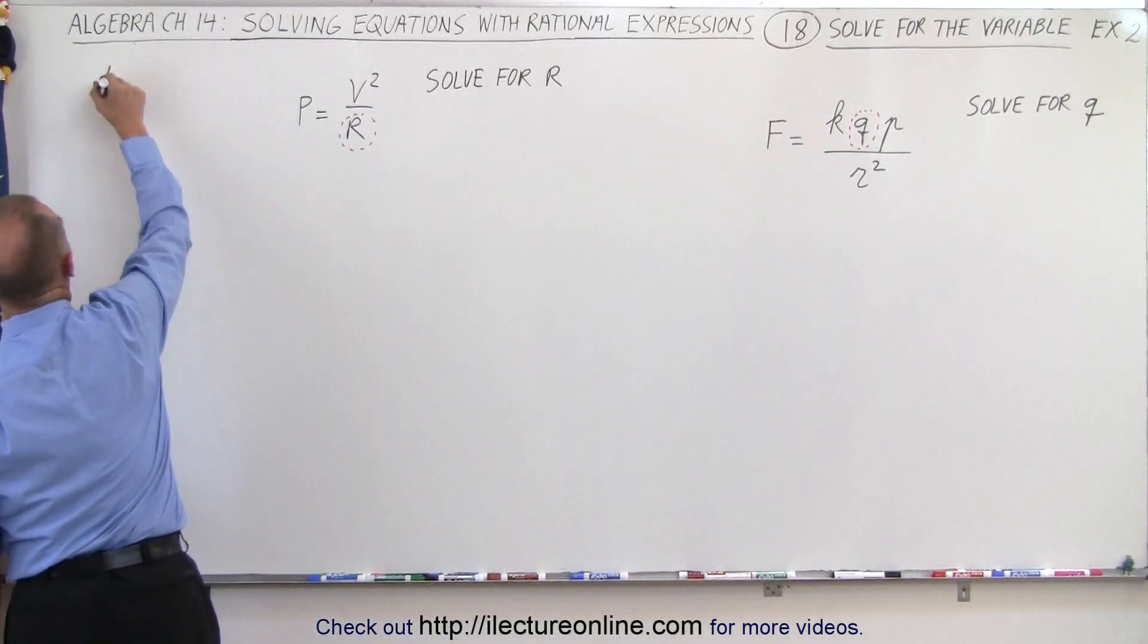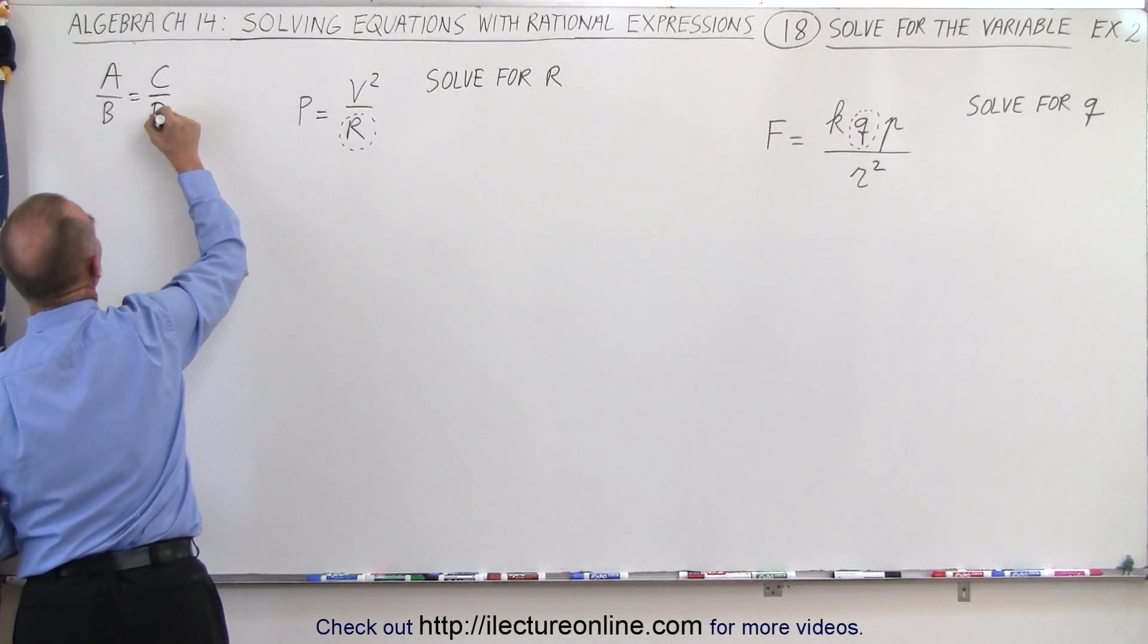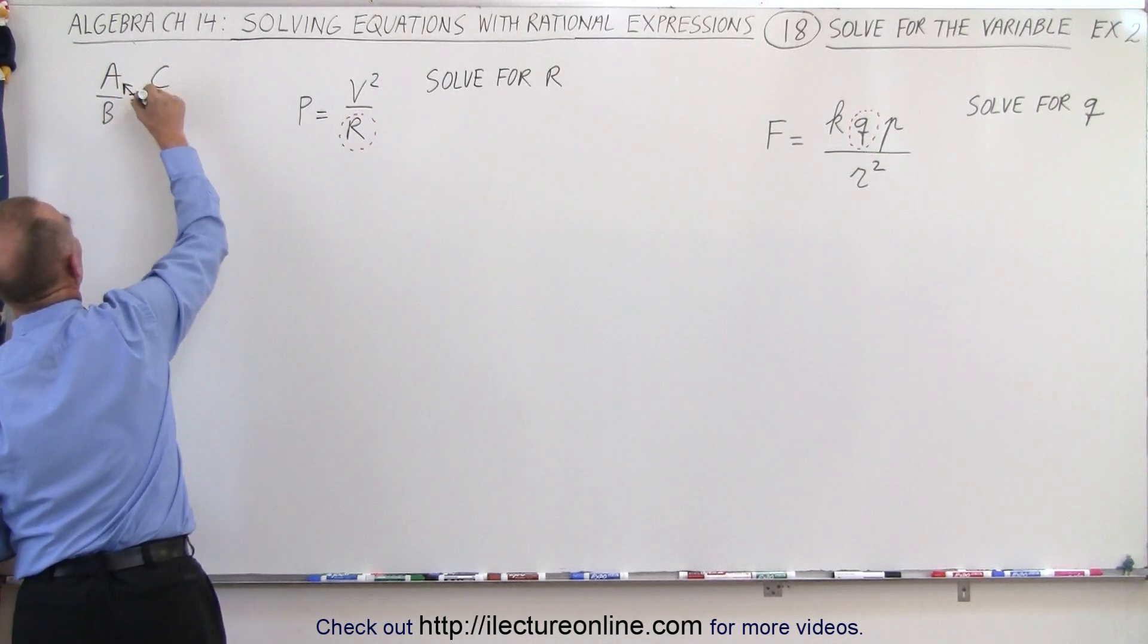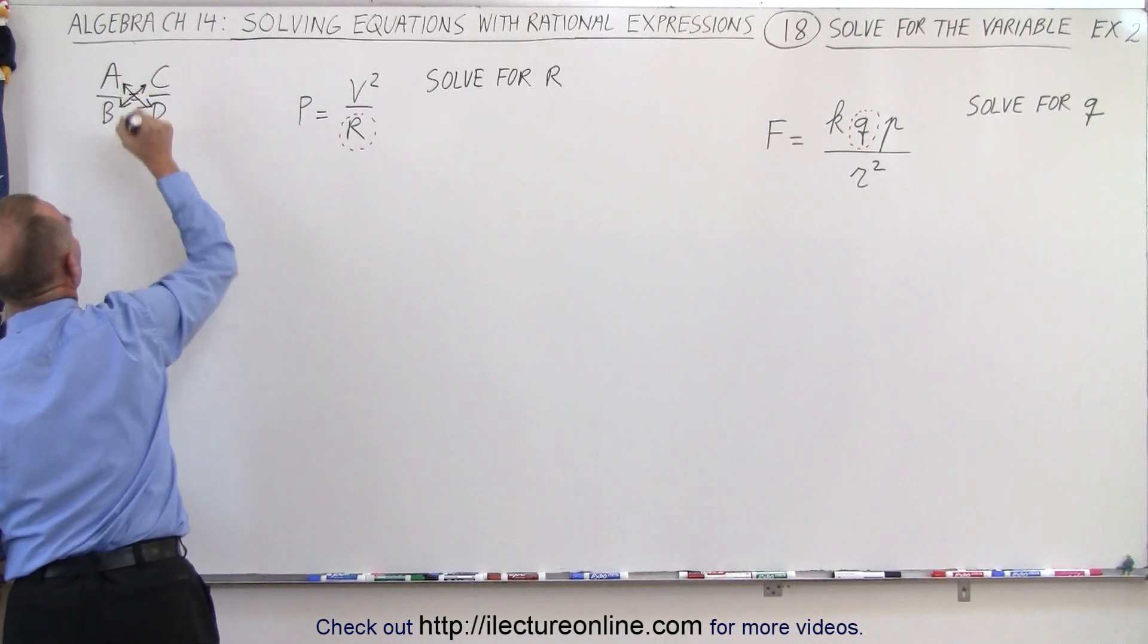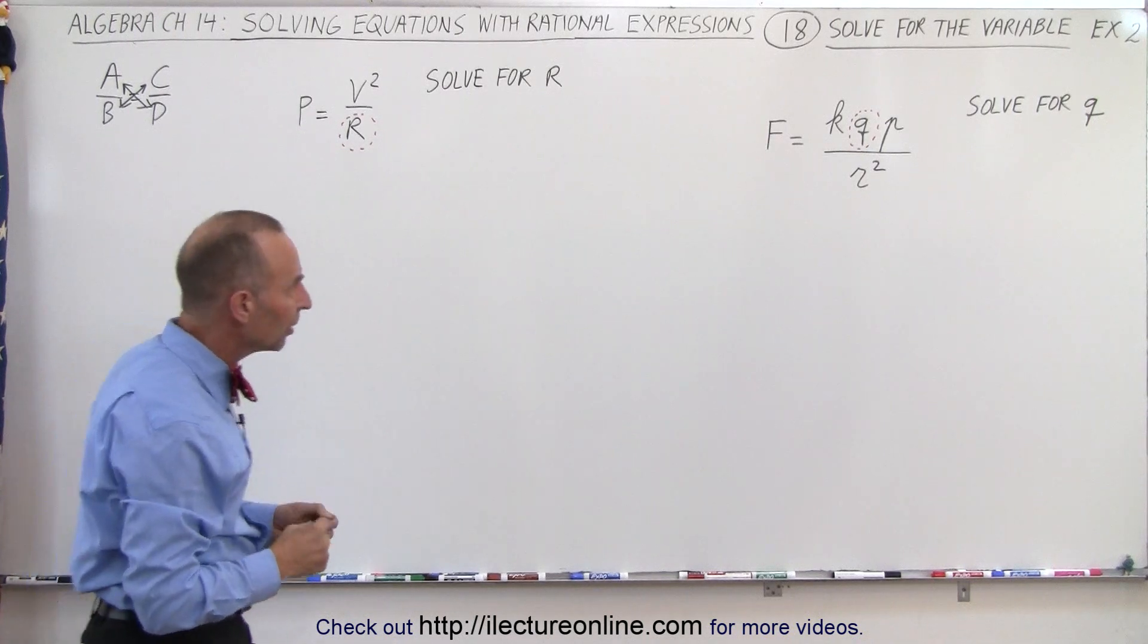Again, if we have for example two fractions a over b equals c over d, we can move any factor across the diagonal. So we'll use both methods to see what that looks like. So first of all,